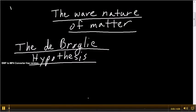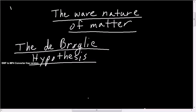In this video we're going to cover the de Broglie hypothesis and how to find the wavelength of matter. We are also going to cover how to find the velocity of an electron that's been accelerated through a potential difference.